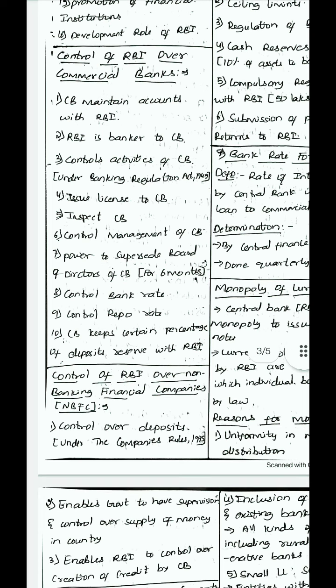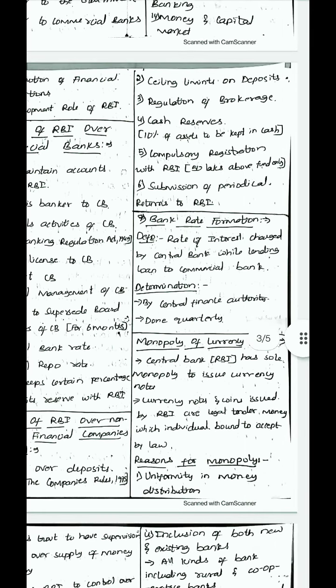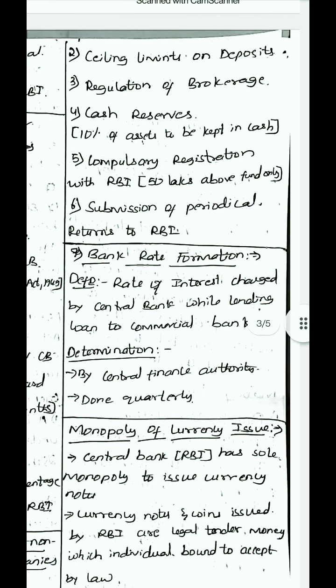The next is control of RBI over non-banking financial companies (NBFCs). RBI controls their deposits under the Companies Act Rules 1975, limiting those deposits. There is a ceiling limit on deposits of non-banking companies. RBI regulates brokerage and cash reserves — 10% of assets must be kept in cash by non-banking companies. Compulsory registration with RBI is required for any non-banking company with above 50 lakh in funds.